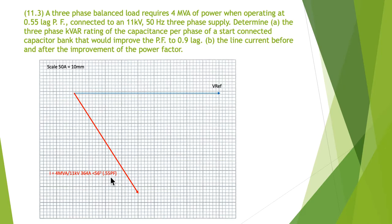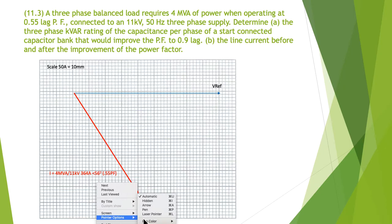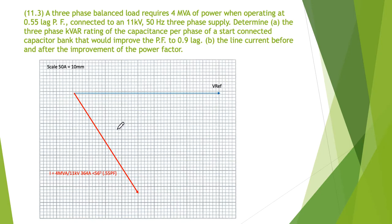I've simply taken 0.55, gone cos to the minus one, and it tells me it's 56 degrees. So there's my 56 degrees.